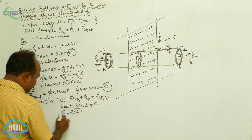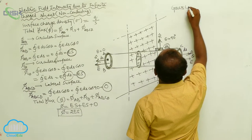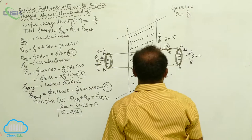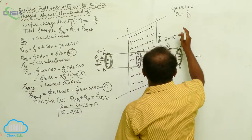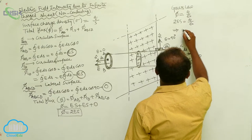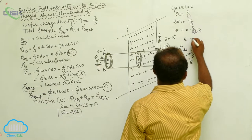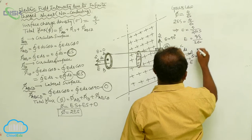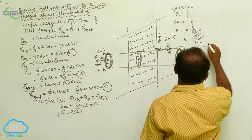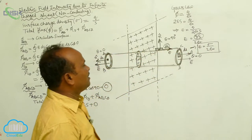According to Gauss's law, flux equals Q by epsilon naught. The total flux we calculated is 2ES. Therefore, 2ES equals Q by epsilon naught. This implies E equals Q divided by 2 times epsilon naught times S. Since Q by S equals surface charge density sigma, therefore E equals sigma by 2 epsilon naught.